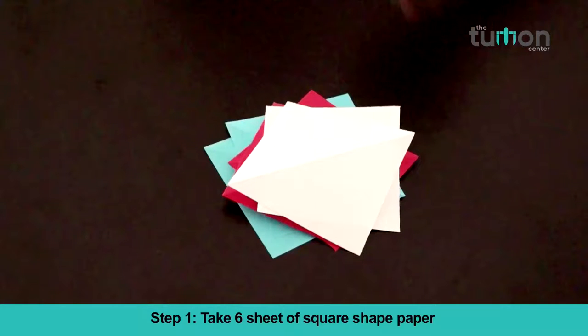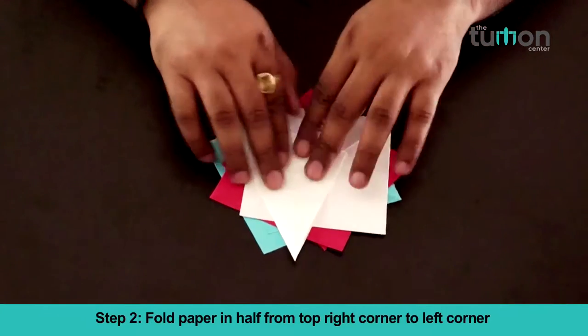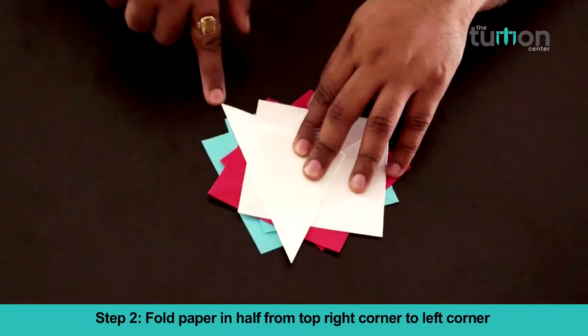Take six sheets of square shaped paper. Fold the paper in half from the top right corner to the left corner.